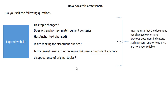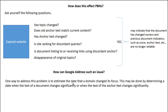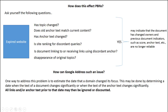If the answer is yes to those questions, this may indicate that the document has changed owners, and previous document indicators such as score, anchor text, etc., are no longer going to be reliable for Google. This means they could reset your backlink profile and all of the previous authority that the website has. One way Google addresses this problem, as stated in their own patent, is to estimate the date that a domain changed its focus — by determining when the text of a document or the text of the anchor text changes significantly. From that date, all links and anchor text prior to it may be ignored or discounted, which means your private blog network would have zero authority in the eyes of Google.